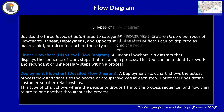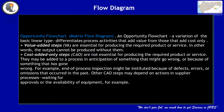The third type is opportunity flow diagram, also known as matrix flow diagram. It is a variation of the basic linear type that differentiates process activities that add value from those that add cost only. There are two parameters shown: value-added and cost-added. For example, end-of-process inspection might be instituted because of defect, error or omission that occurred in the past. Other non-value-added steps may depend on actions in supplier process, waiting for approval, or availability of equipment.